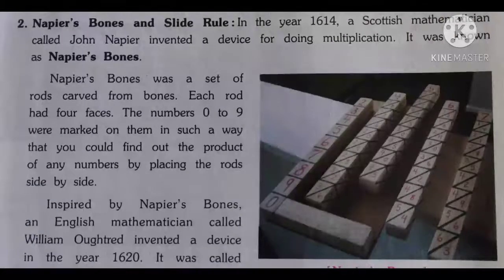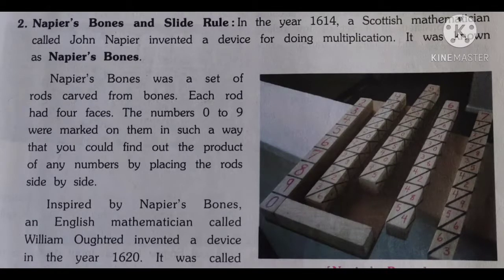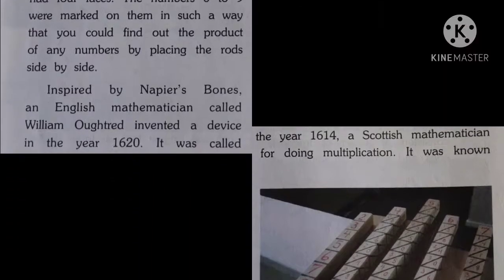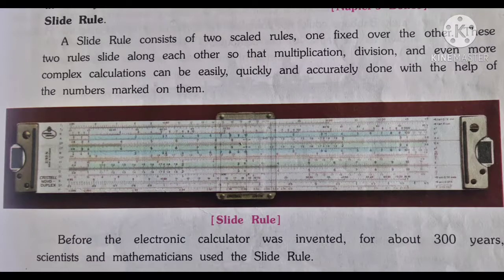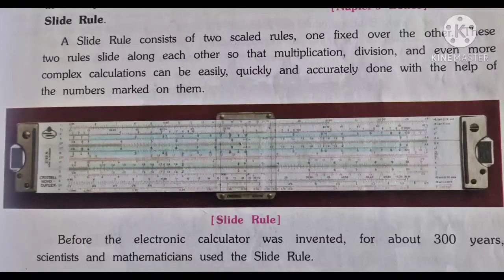Inspired by Napier's Bones, an English mathematician called William Oughtred invented a device in the year 1620. It was called the Slide Rule. A Slide Rule consists of two scaled rules, one fixed over the other. These two rules slide along each other so that multiplication, division, and even more complex calculations can be easily, quickly, and accurately done with the help of the numbers marked on them.